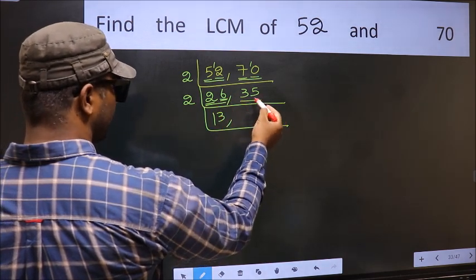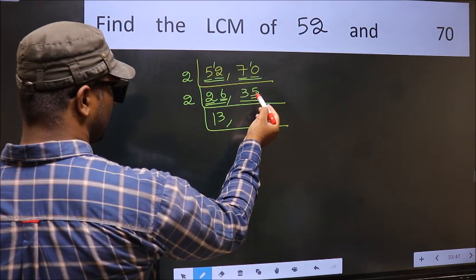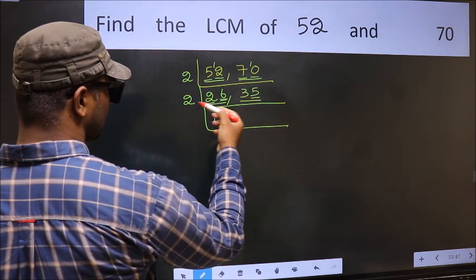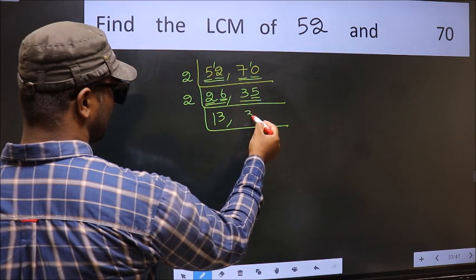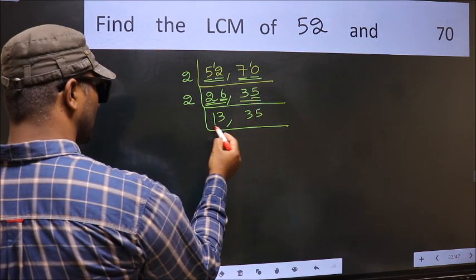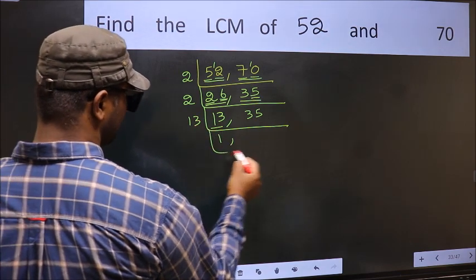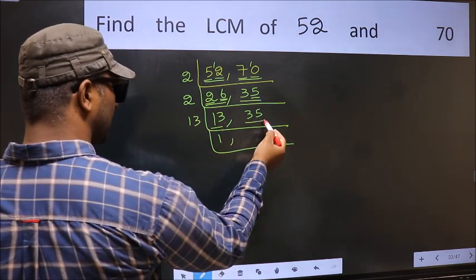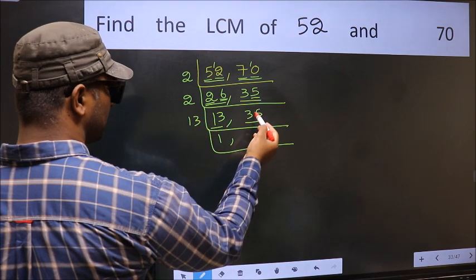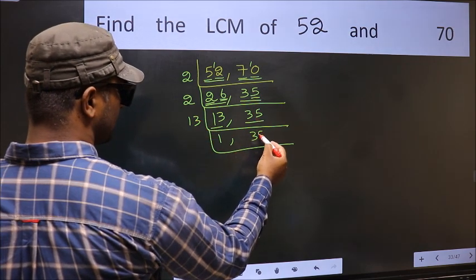The other number 35, last digit 5, not even, so this is not divisible by 2. So we write it down as it is. Now here we have 13. 13 is a prime number, so 13×1=13. The other number 35 is not divisible by 13, so we write it down as it is.